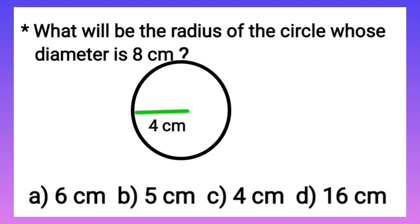Let's see which option is correct. Is it option A, 6 centimeters? No. Then option B, 5 centimeters? Again, it's incorrect. Now option C, 4 centimeters - yes, this is the answer we have calculated. Let's put a tick here.